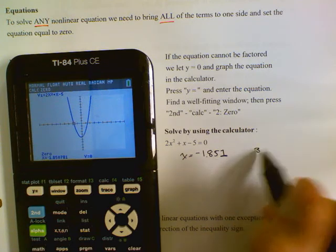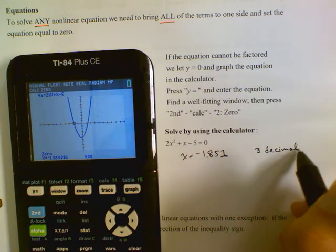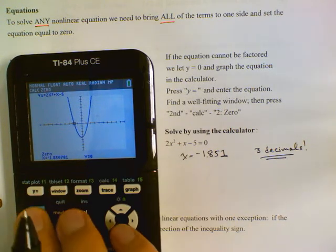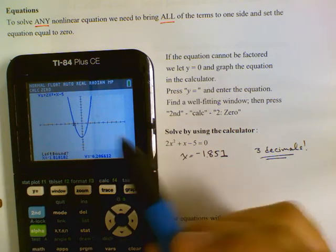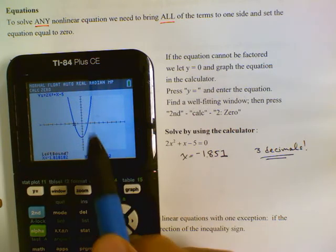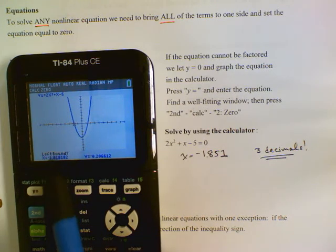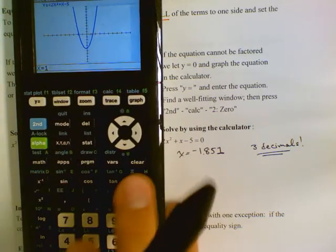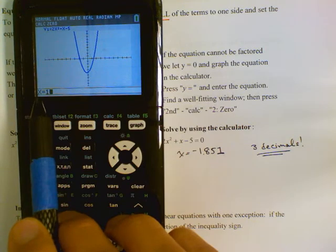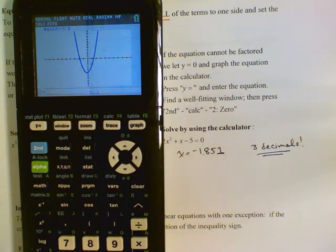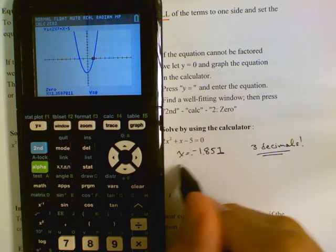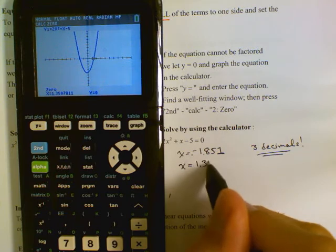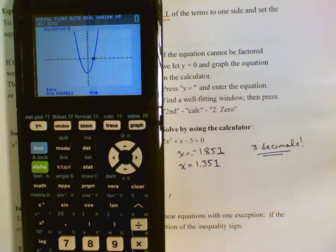We're going to do three decimals of precision in calculus. Then we're going to find the next one by pushing second calc 2. I know the answer is between one and two, so my left bound I'll push 1, then push 2 for the right bound, and I'll guess 2 as well — that makes it even faster. Our second answer is x equals 1.351.